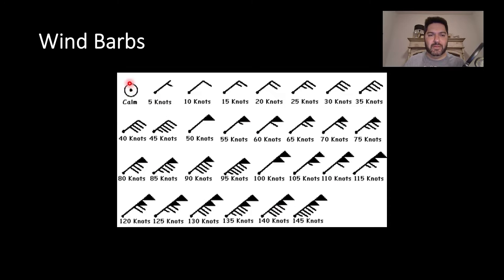Calm here, you've got a circle with a little dot in the middle. And then the little broken looking wind barb, that's five knots. And then you've got 10 knots and 15 knots and so on.